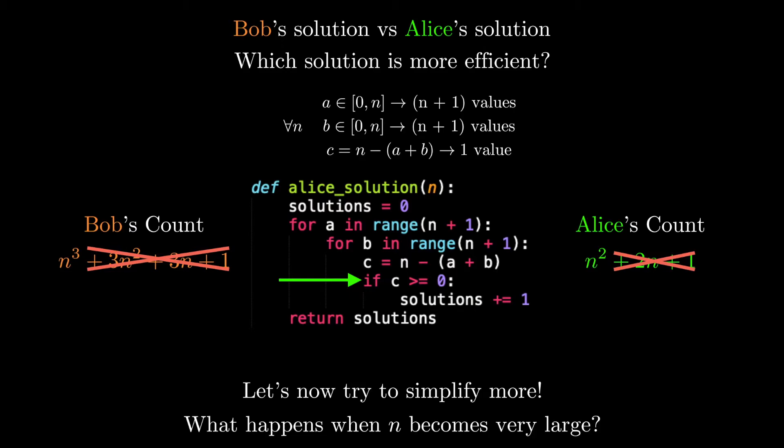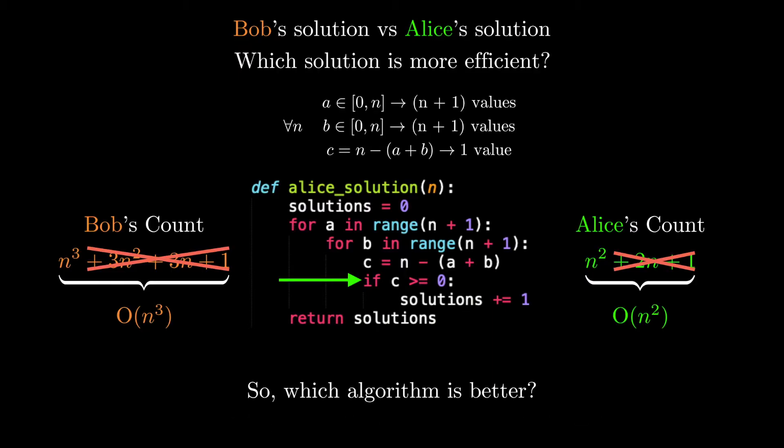Bringing this all together, this final single term for each of these algorithms encapsulates what we call the running time of an algorithm. And computer scientists use a special notation called Big O notation to express the approximations and simplifications we just went through. Using this notation, we can now say that Alice's algorithm is indeed more efficient than Bob's because it runs in O of n squared time, which grows at a much slower pace than Bob's solution, which is O of n cubed.